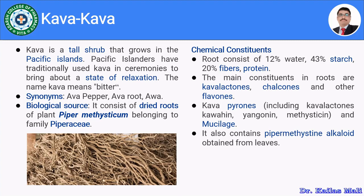You can see the image to understand how the roots look. The plant is a tall shrub. Moving towards the chemical constituents of kawakawa: the root comprises around 12% water, 43% starch, 20% fibers, and protein. Mainly, kawakawa comprises kawakawa lactones, chalcone, and other flavones. Furthermore, it comprises kawakawa lactones, kawahine, yangonine, and methysticin along with mucilates.